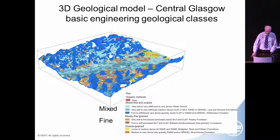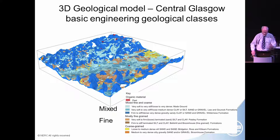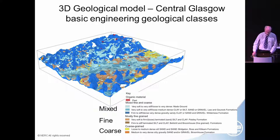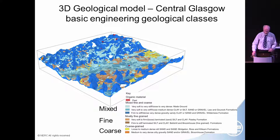Then we come into the fine materials — the brown — so that's essentially silts and clays. The paler the colour: very soft to firm; these tend to be laminated as well. The darker colour is firm to stiff. Then we come to the yellow and orange colours — coarse. The pale colour is loose to medium dense, and the darker colour is medium to very dense. So for the Quaternary we've got a very simple classification, but we can use that in many ways.